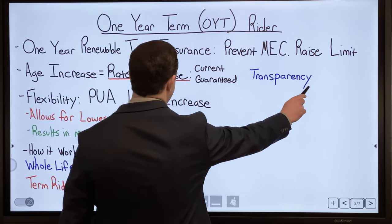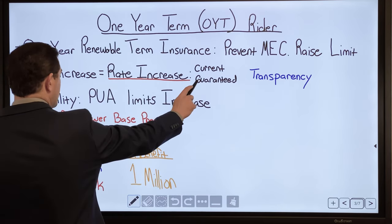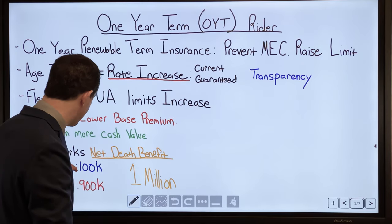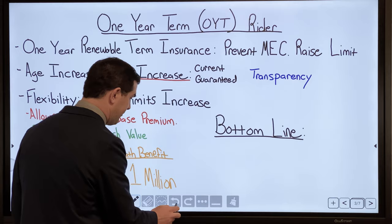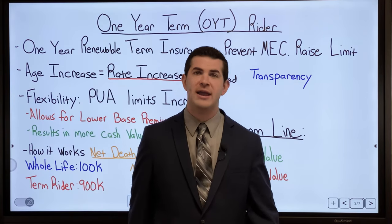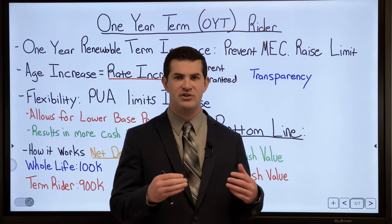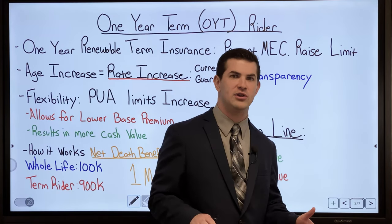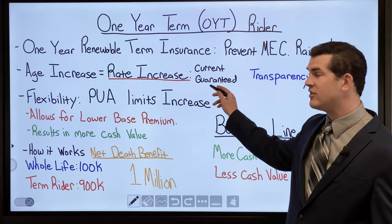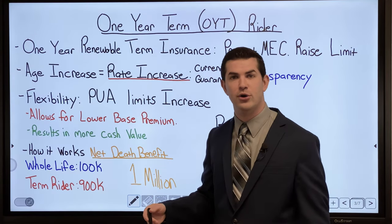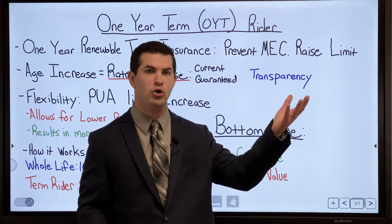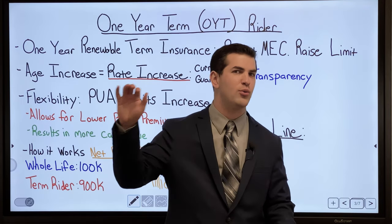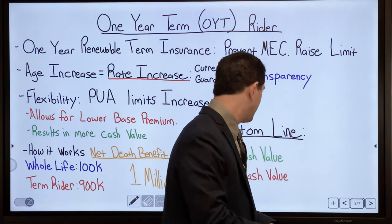When constructed correctly, whole life goes up and term goes down — like a seesaw — keeping the net death benefit the same until you're all whole life. Transparency is critical regarding the rate increase on current and guaranteed rates, and how the net costs function. The bottom line: does it give me more cash value or less? If we want to look at worst-case, we use guaranteed term cost with no dividends and guaranteed cash value interest rate — comparing a policy with this term rider against one with half the term rider.